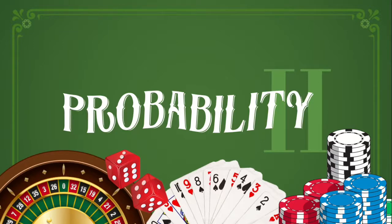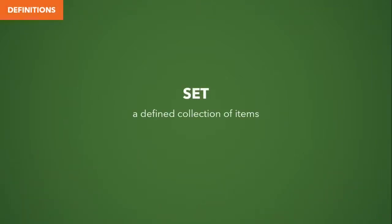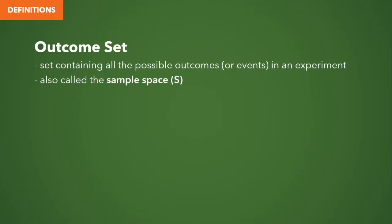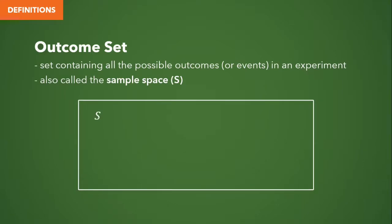In this lesson, we will talk about sets, Venn diagrams, and the general operations applied to probability. First off, let's define a few terms. The first term is the set. A set is a defined collection of items, and in particular, we will be talking about the outcome set.